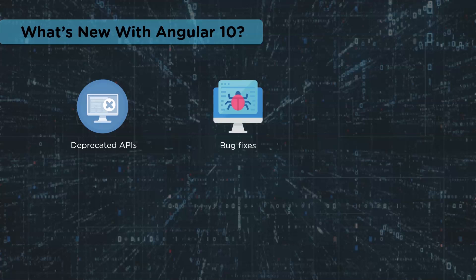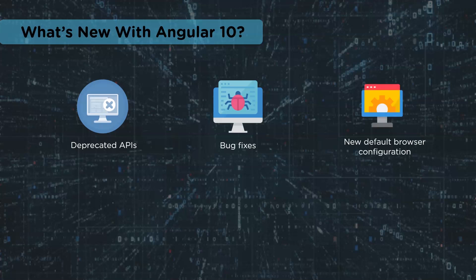With Angular 10 there have been a number of bug fixes, including the compiler avoiding undefined expressions in an array, and the core avoiding a migration error when a non-existent symbol is being imported. Another crucial bug fix ensures proper identification of modules affected by overrides in TestBed.